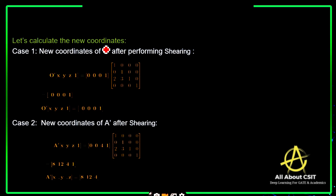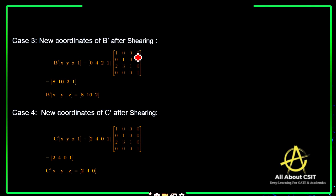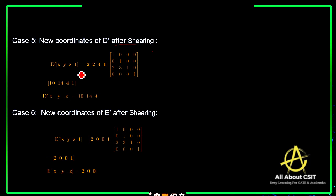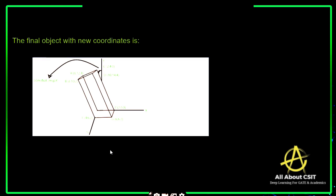Calculating the new coordinates: O-dash coordinates are computed — Sz is not required, only Sx and Sy. These are the new coordinates after shearing. For A-dash: Sx is 2 and Sy is 3. New coordinates of B-dash after shearing, C-dash is (2, 4, 0), D-dash new coordinates are computed by multiplying with the shearing factor along Z direction. E-dash, F-dash new coordinates are (4, 6, 2), and G-dash new coordinates are (6, 6, 2).